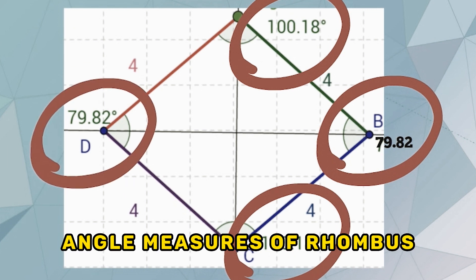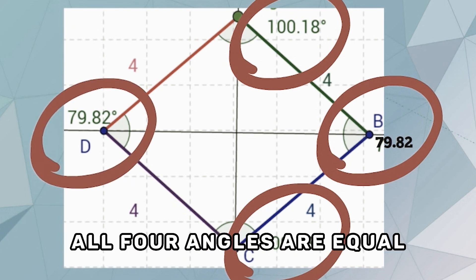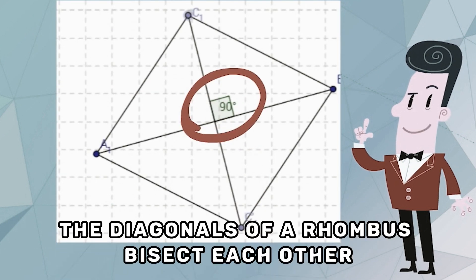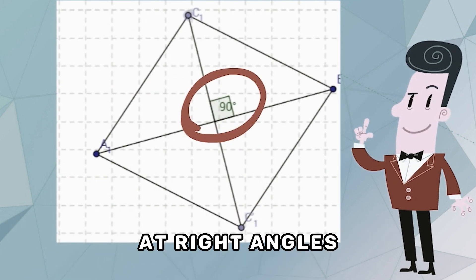Angle measures of rhombus: In a rhombus, all four angles are equal and measure 90 degrees. The diagonals of a rhombus bisect each other at right angles.